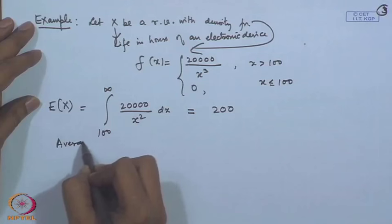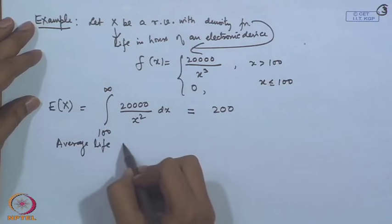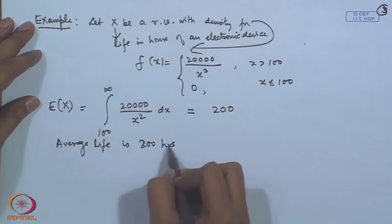We conclude that the average life of the device is 200 hours. Rather than examining the entire distribution, this single piece of information is very useful. A person may not be completely interested in the entire distribution — they may be satisfied with the average value. Based on this average life, we can make certain decisions.